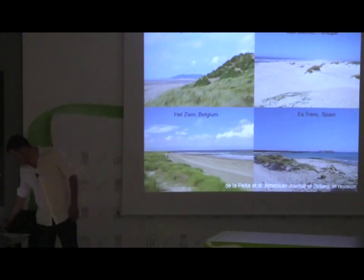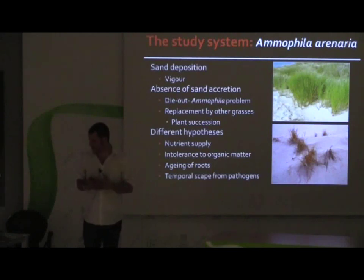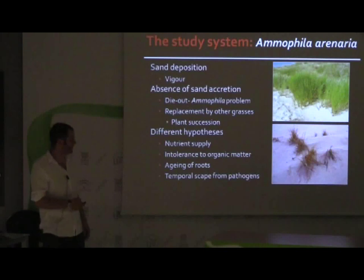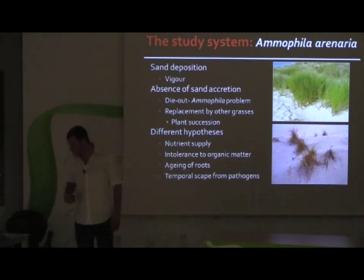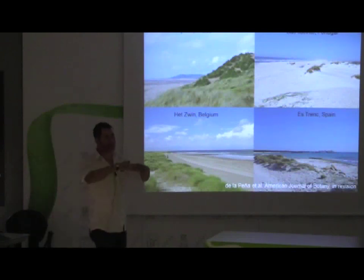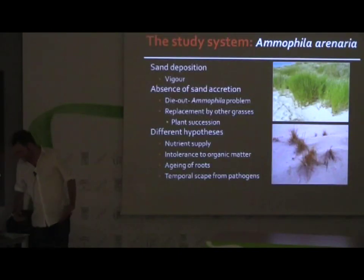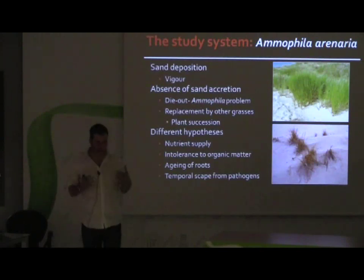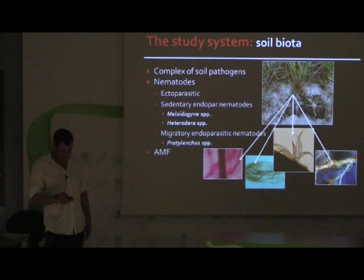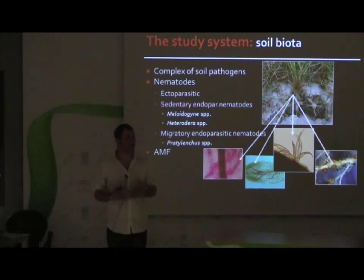One important process that occurs with Amorphila arenaria is that there is a decrease in vigor and growth after some years. This plant is quite dominant in the dunes, but after a while, when the dunes get fixated, it starts to decrease and lose vigor. Some people have speculated about the factors driving this decrease in fitness, and some postulated that a complex of soil pathogens — including plant parasitic nematodes and fungi — could be playing a role here.